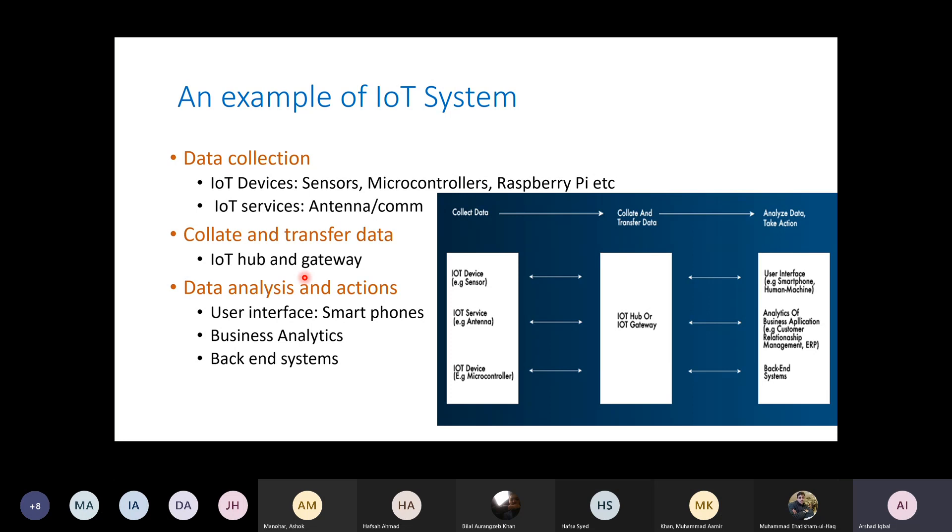If you could see in the figure, there is information about devices, services, IoT hub, gateway, and analytics. Data collection usually consists of IoT devices which contain sensors, microcontrollers, Raspberry Pi, etc., while IoT services would be communication through antennas.